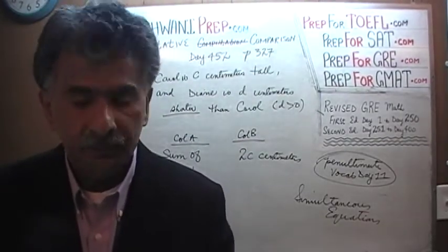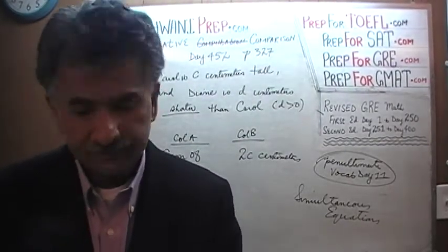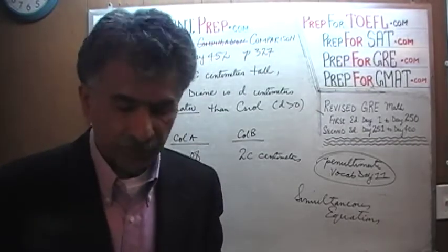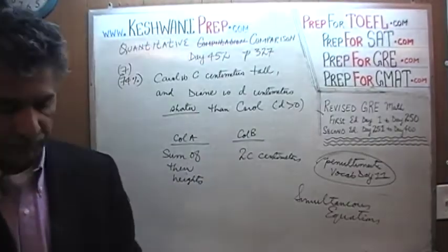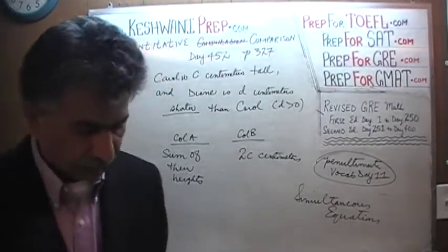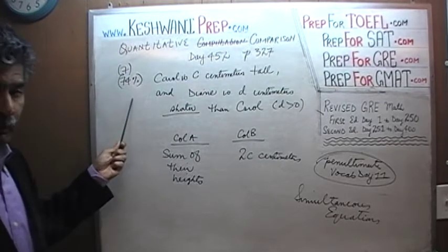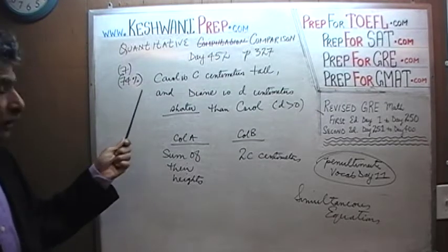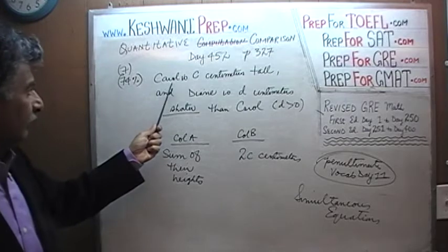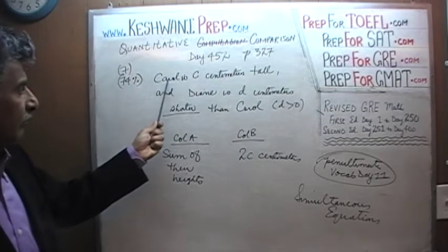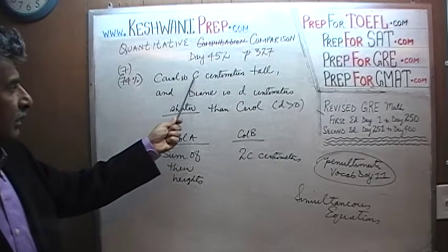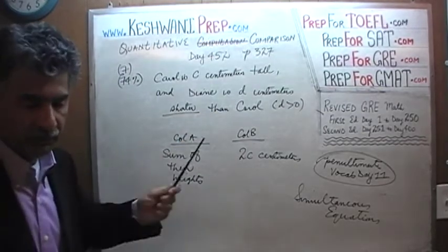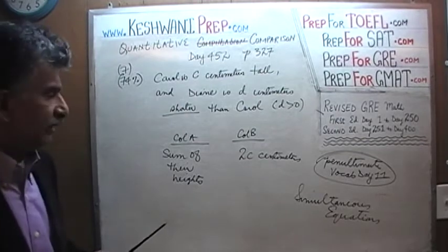The very first problem you see in the second column — the problem is already on the blackboard. Problem number 7; 74% of the people had no trouble with it. It goes like this: Carol is C centimeters tall.